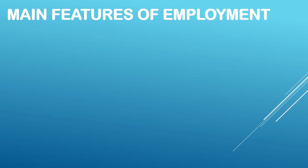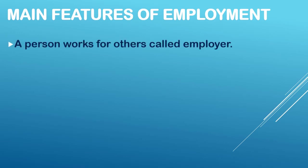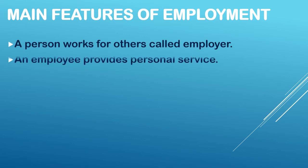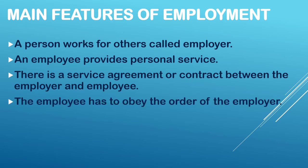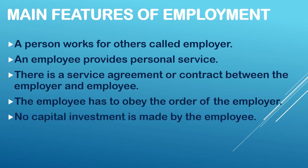Main features of employment: a person works for others called an employer. An employee provides personal service. There is a service agreement or contract between the employer and employee, as mentioned. The employee has to obey the orders of the employer — the employer or boss gives orders and the employee or worker must follow them.